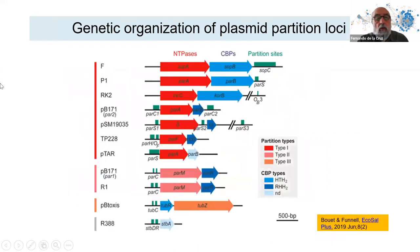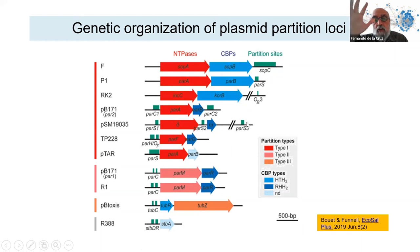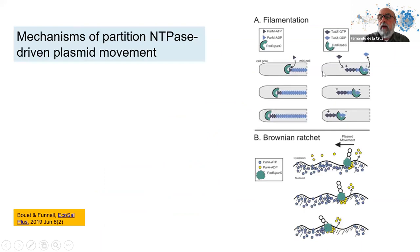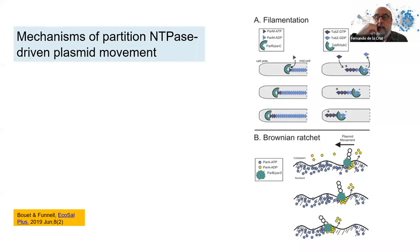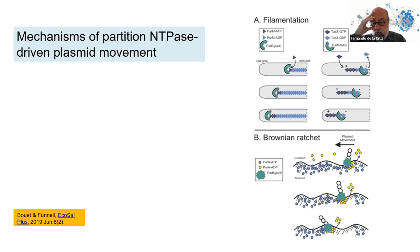Regarding partition: there is always an ATPase and another protein that binds to a partition site. Different families are used by different plasmids, but the general mechanism is similar — copies of the plasmid are moved to opposite poles of the cell before division, ensuring stable inheritance even at a copy number of two. The partition system is about 2 to 3 kb.